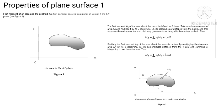First moment of area and centroid. We first consider an area on a plane, let us call it the XY plane. As shown in the figure, there is a body which is placed in the XY plane. The first moment Mx of the area about the x-axis is defined as follows.